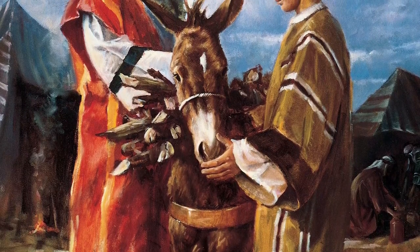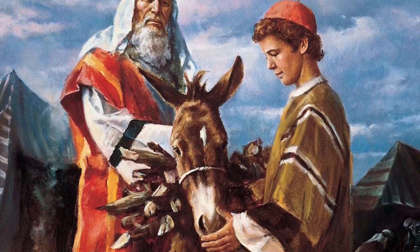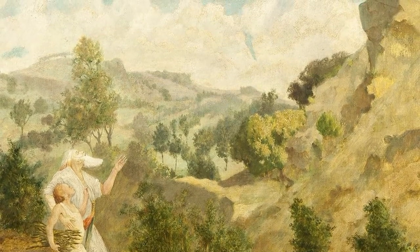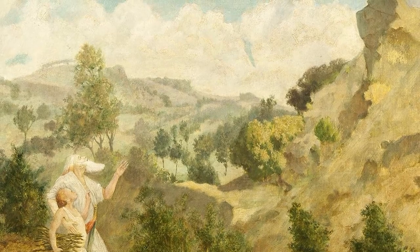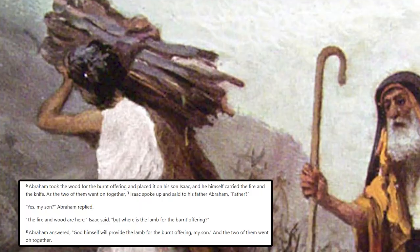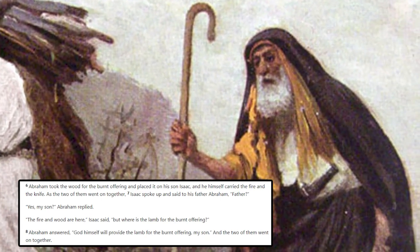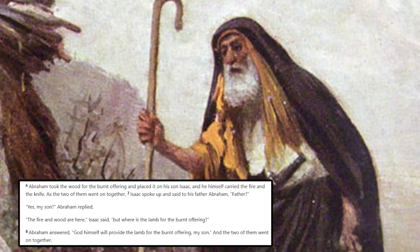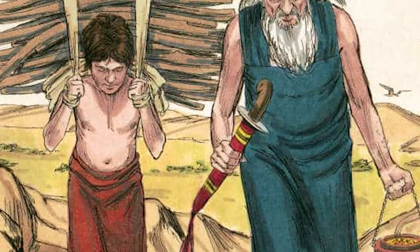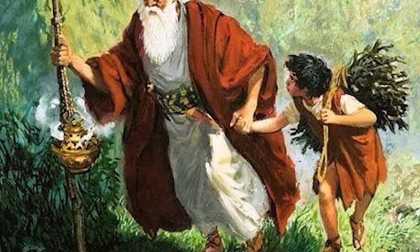The next morning, Abraham, Isaac, and two of Abraham's servants collected wood for the burnt offering and then set out to Moriah. When Abraham saw where the sacrifice would take place in the distance, he told the servants to stay and he went alone with Isaac. Isaac asked his father where the lamb was for the offering, and Abraham replied saying that God will provide the lamb. The two started to walk up — Isaac carried the wood, Abraham carried the fire and a knife. They reached the spot that God had told them to go.